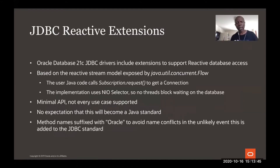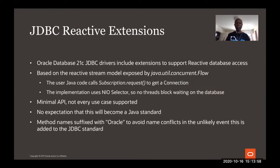So what are the reactive extensions in the JDBC driver in the Oracle Database 21C release, which will come any time now? When you get the driver jar, it includes the extension to support reactive database access. This is based on java.util.concurrent.Flow. The Flow API has two interfaces: the publisher interface and the subscriber interface, with the methods I've shown. The Java user code just calls a subscription request to get a connection, and from that the reactive streaming will happen.